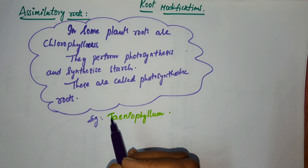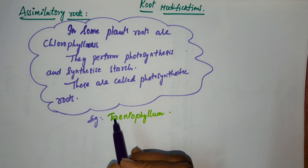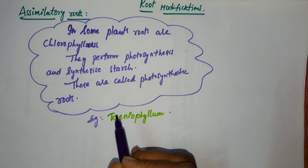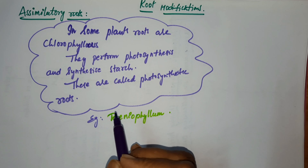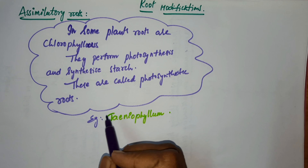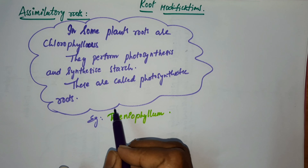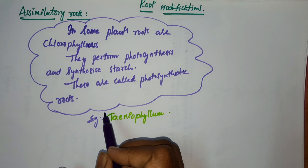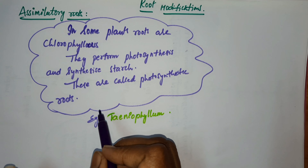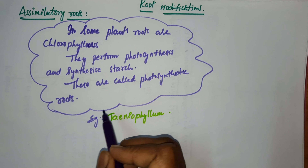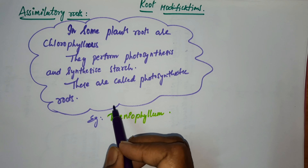Assimilatory roots are photosynthetic roots. In some plants, roots are chlorophyllous. They perform photosynthesis and synthesize starch. These are called photosynthetic roots. Photosynthetic roots contain chlorophyll, which is green in color, and carry out the process of photosynthesis to prepare starch.